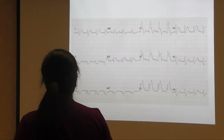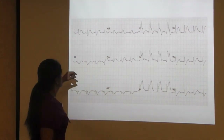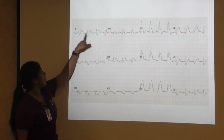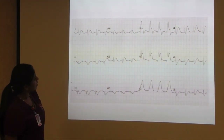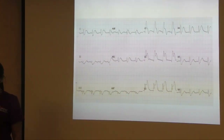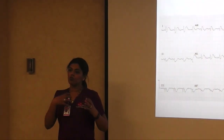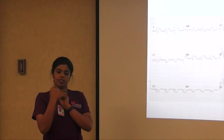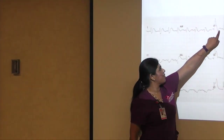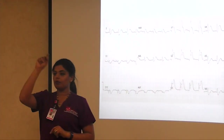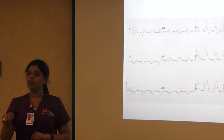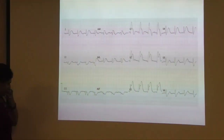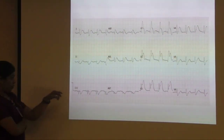Looking at this first case EKG: you have positive P waves in leads 2, 3, AVF and positive P waves in lead 1 and AVL — that's sinus rhythm. V1 also helps distinguish right atrium from left atrium. Because the right atrium sits in front of the left atrium, you typically see a biphasic P wave in V1 — the first part is the right atrial wave and then the left atrial wave. This is sinus rhythm at about 80 beats per minute with a one-to-one relationship.